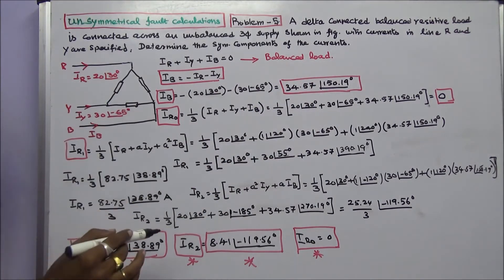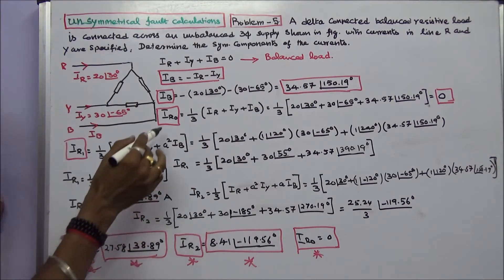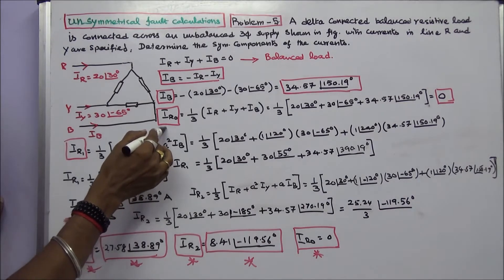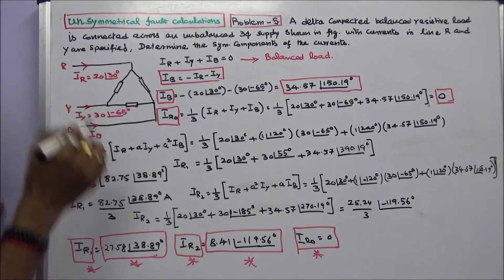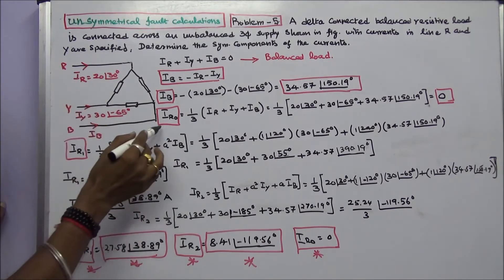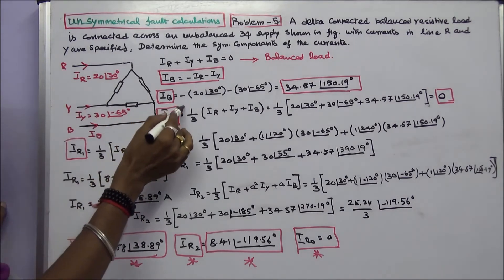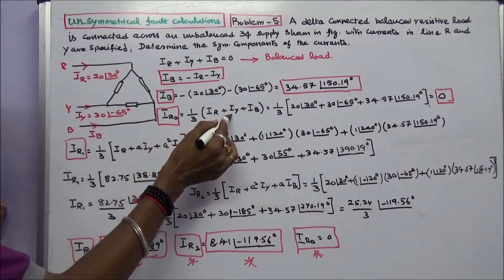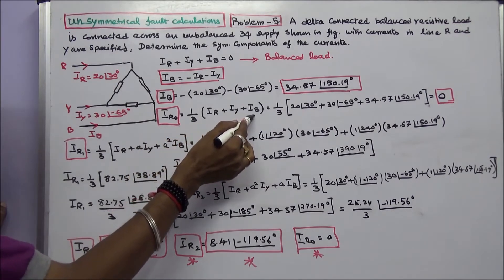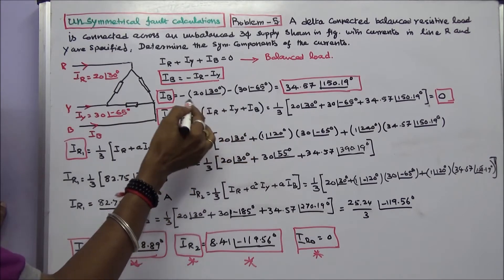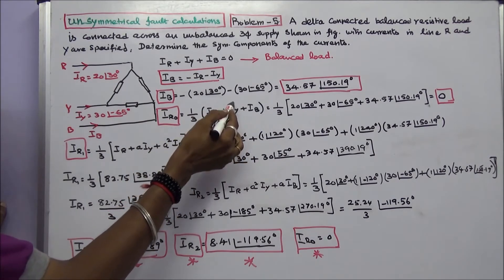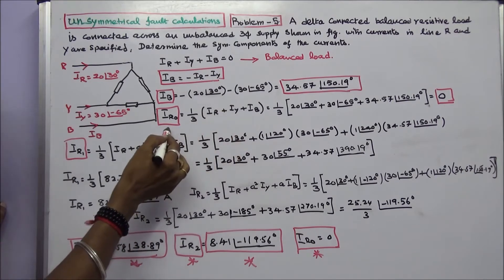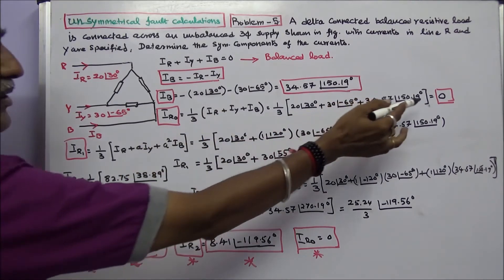Next we calculate IR0, the zero sequence component in the R phase. IR0 is equal to 1/3 into IR plus IY plus IB. Substituting IR, IY, and IB in this equation, IR0 is equal to zero.